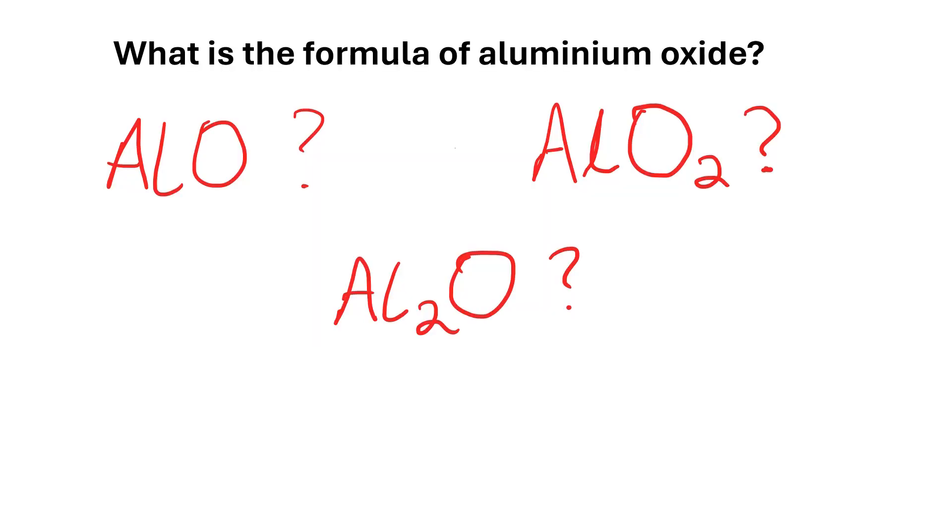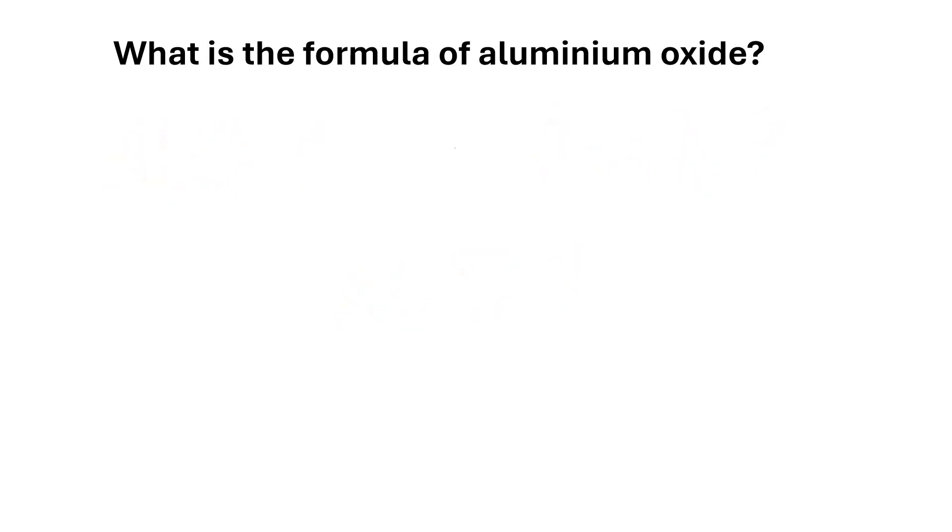So what we're trying to find out, for example, is what is the formula of aluminium oxide. We know from the periodic table that aluminium is Al and oxygen is O. So is the formula of aluminium oxide just AlO, or is it AlO2, or is it Al2O? Well in actual fact it's none of these and I'll show you how to work it out.